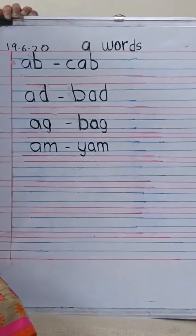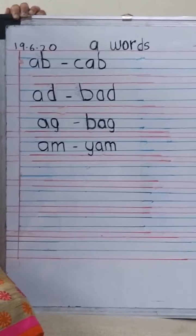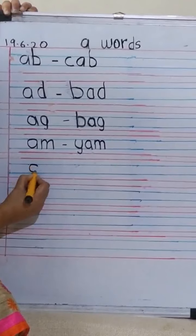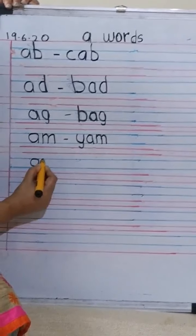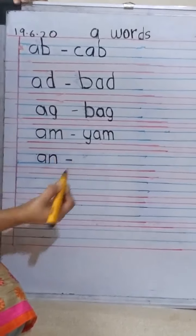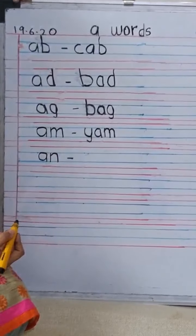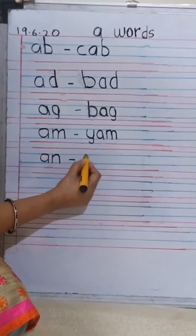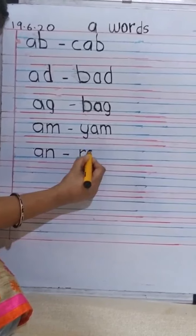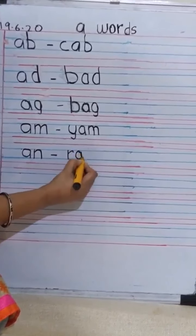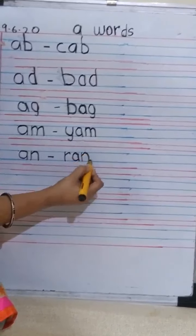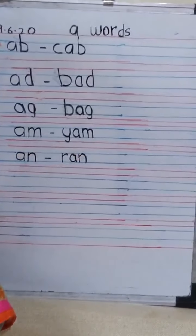So now we are going to do the next one. That is AN, AN. So a A and a N. And give a small dash, and then we will write a RAN. A standing line. A R, A, and a N. So can you see all the words are between these blue lines. Yes.